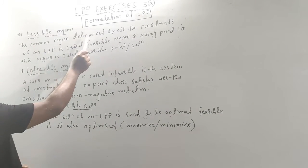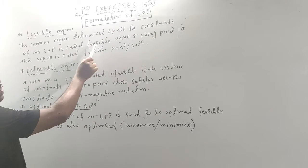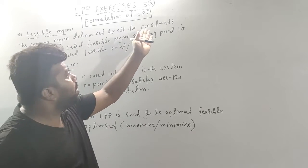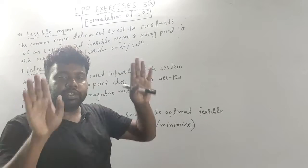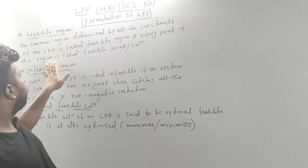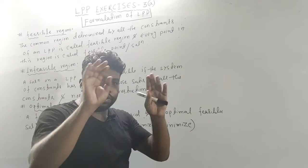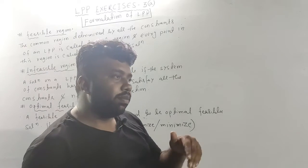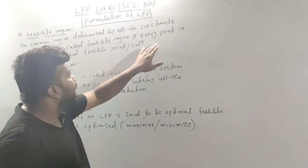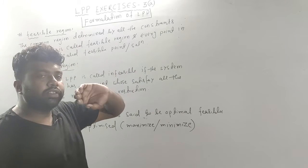The common region determined by all the constraints of an LPP is called the feasible region. The constraints are satisfied in this region. Every point in this region is called a feasible point or feasible solution.